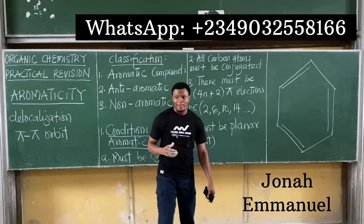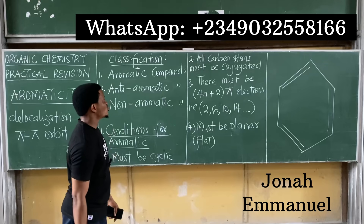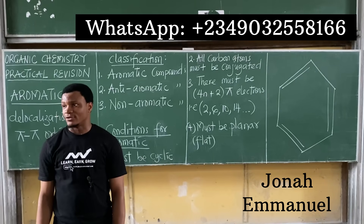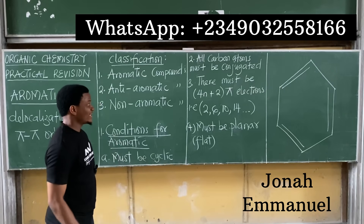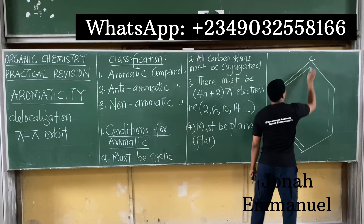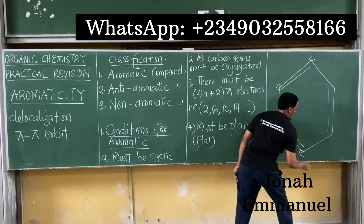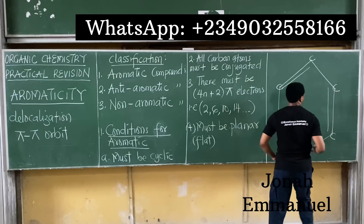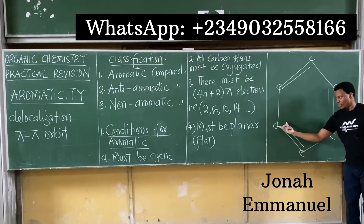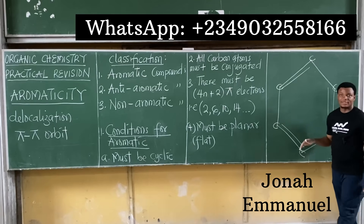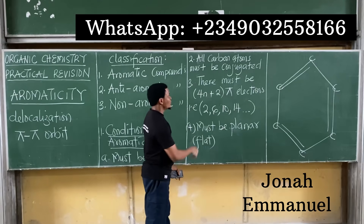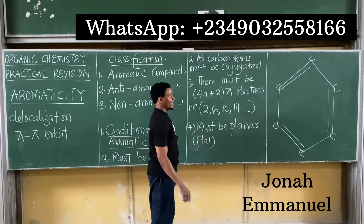Looking at benzene: carbon atoms one, two, three, four, five, six — each one has a double bond. So every carbon atom is conjugated. Check. Condition three: there must be 4n + 2 pi electrons. How do we get that?